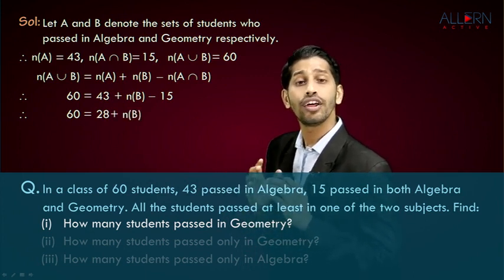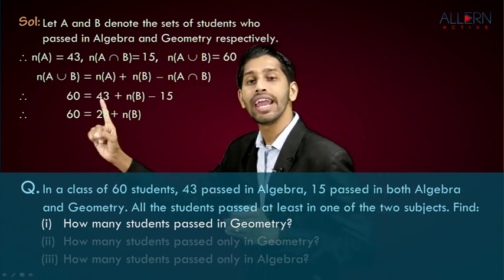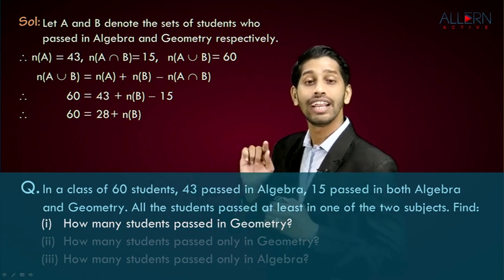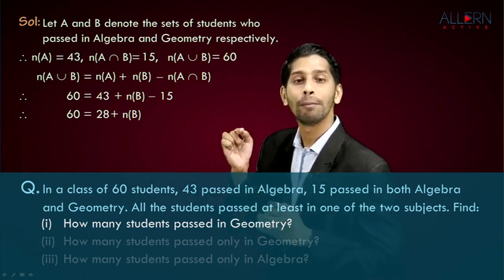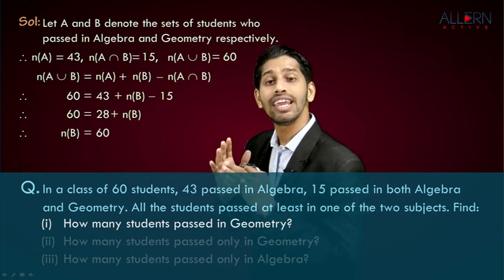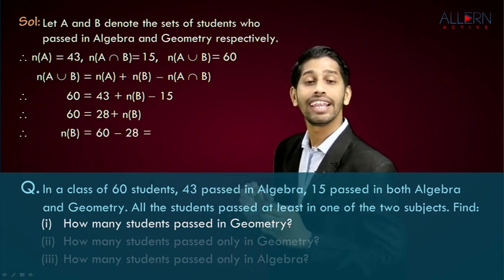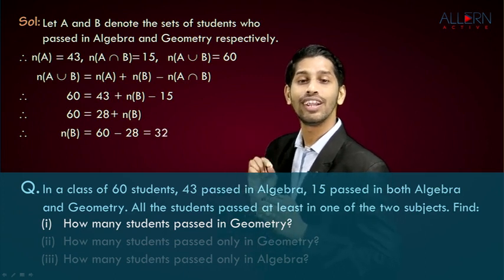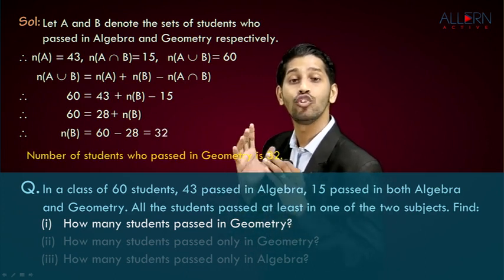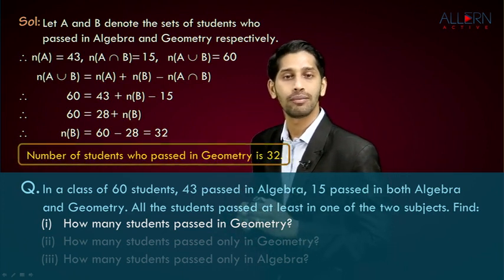To get the value of N(B), we shift 28 to the other side, so N(B) = 60 − 28 = 32. That means the number of students who passed in geometry is 32. That completes our first sub-question.